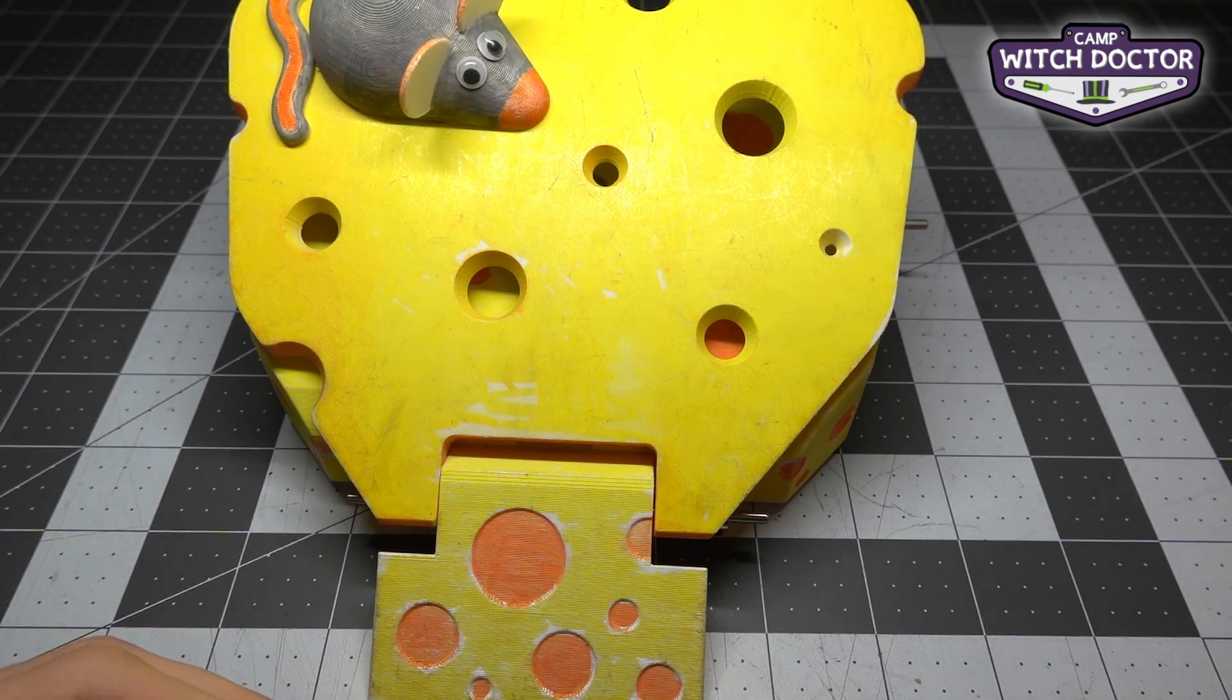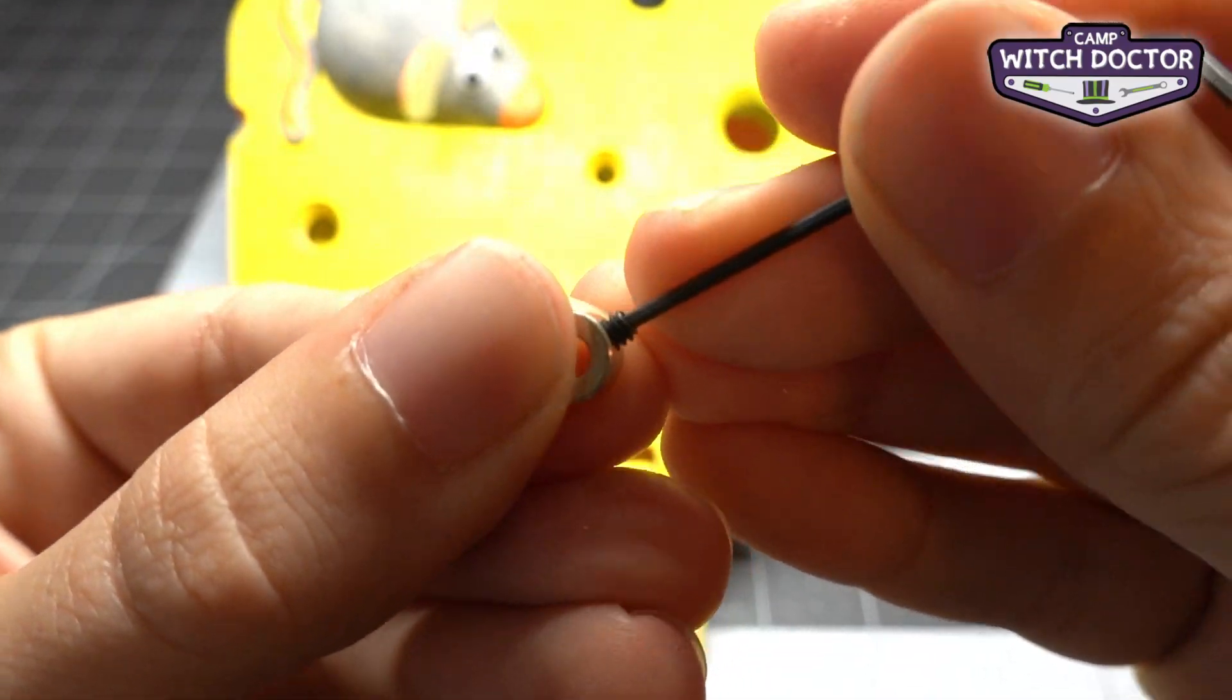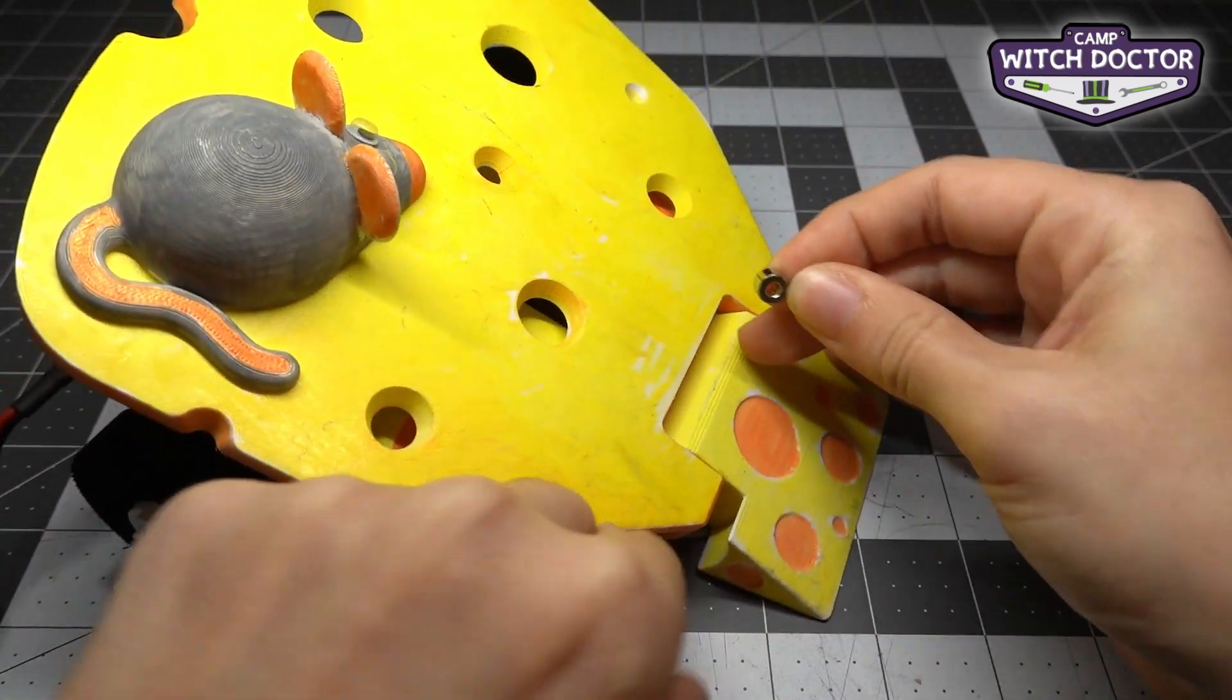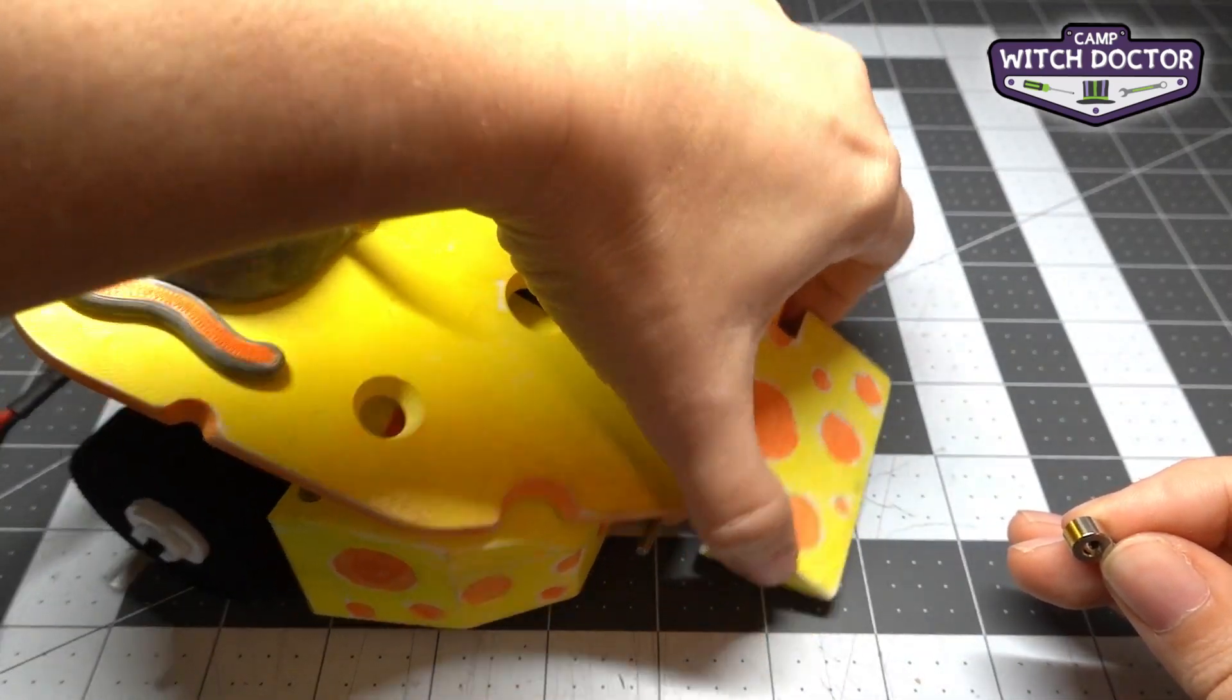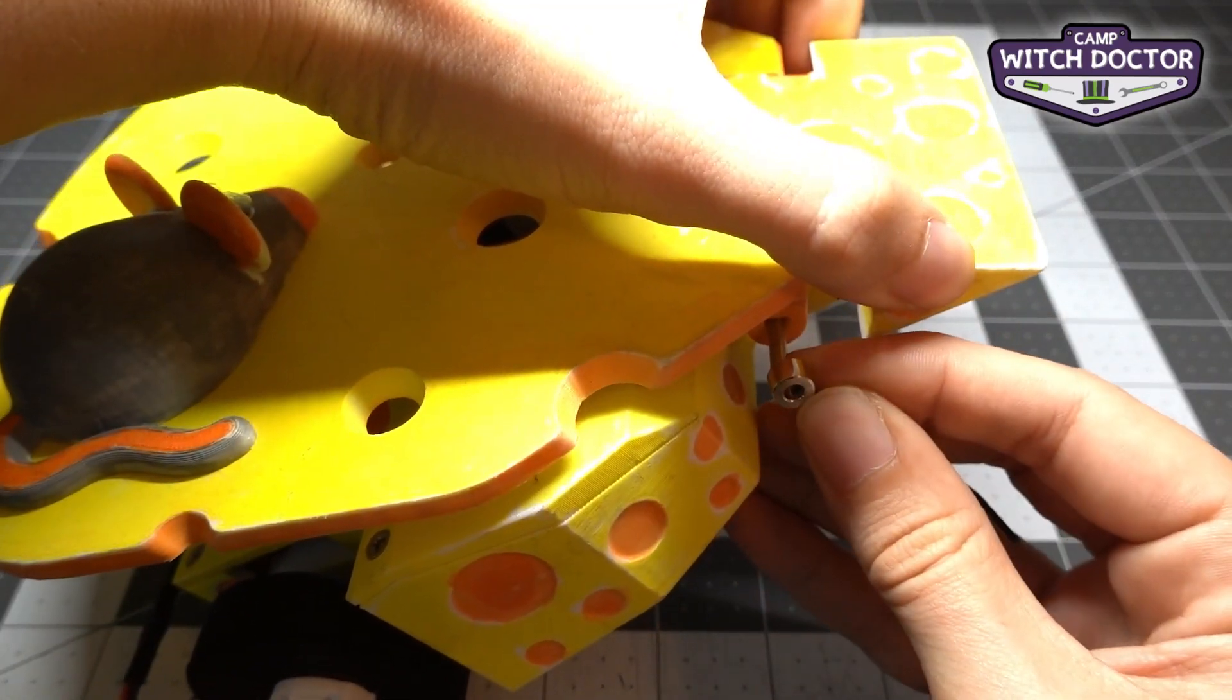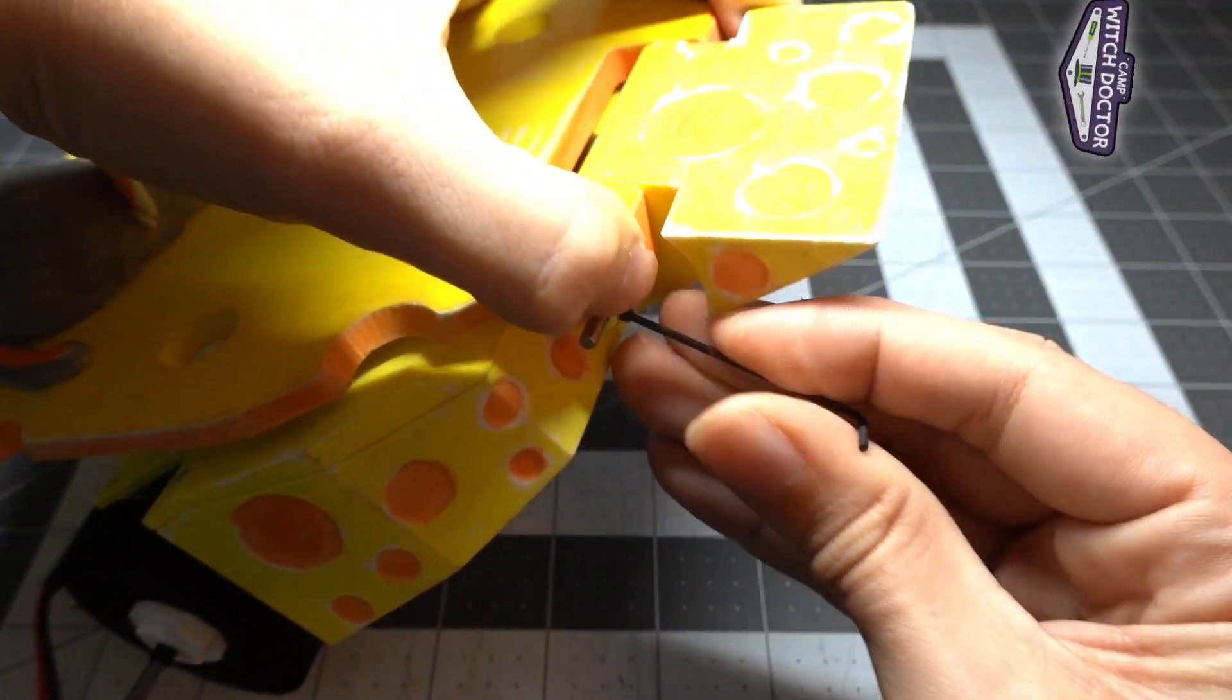All right that's one side. Now I'm going to do the same thing for the other side. When you're doing the second side it helps to put your finger on the opposite side so that you don't push the shaft through when you're trying to slide your shaft collar on.